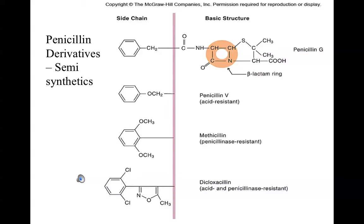For Penicillin V, that was often a commonly used penicillin, it is simply acid resistant. Methicillin was a semi-synthetic derivative of penicillin that could resist the enzyme penicillinase, which can be produced by some bacteria to break down penicillin. Dicloxacillin was simply a combination of both acid and penicillinase resistance, allowing its use to treat complex drug-resistant or acid environments.